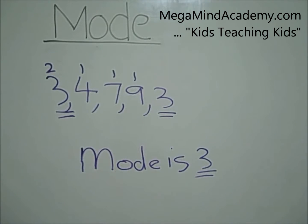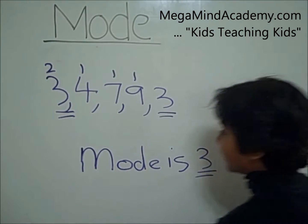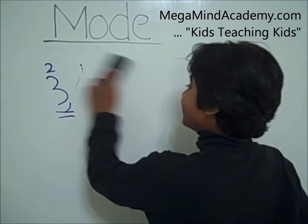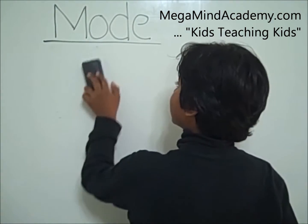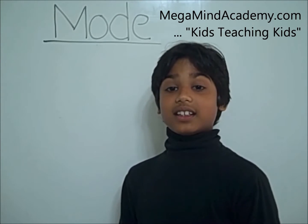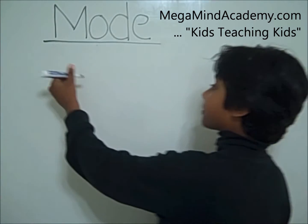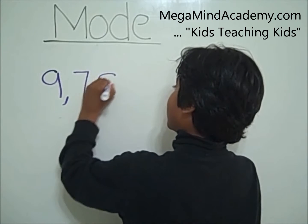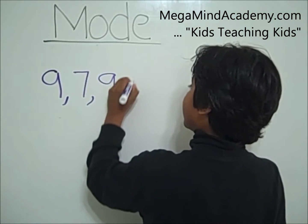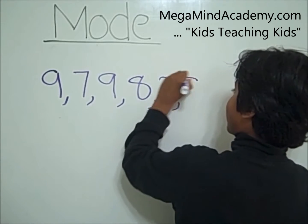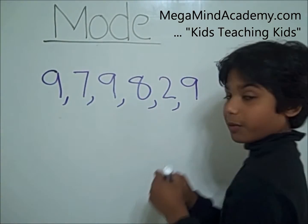Let's look at another example. This time, let's say the given set of data is 9, 7, 9, 8, 2, 9. How do we find the mode?